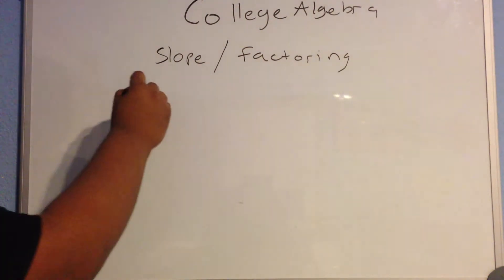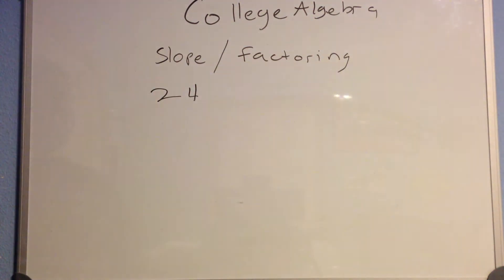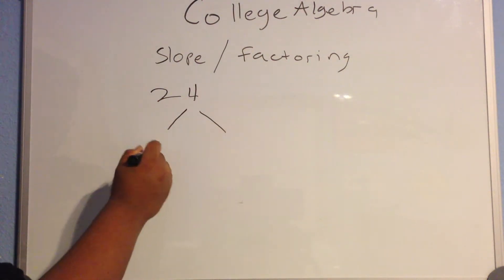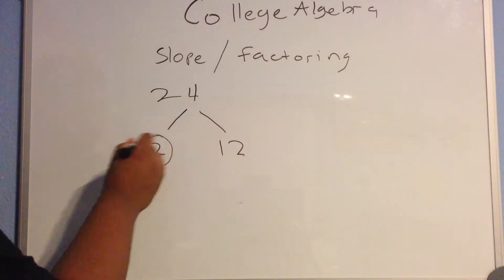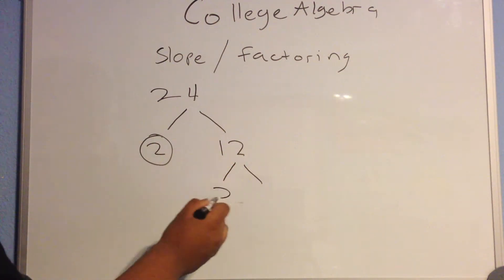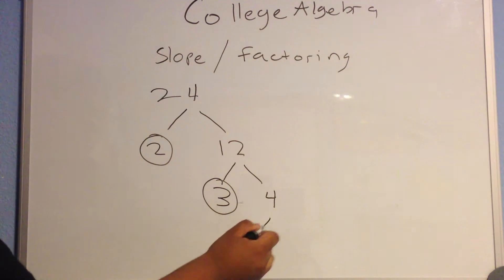Let's do 24. There's actually a good way to get the prime factors, and it would be through a spiderweb method. Essentially, you would do 2 times 12. Here's a prime factor, so ignore that. Here's 12, and 12 would be 3 times 4. Here's a prime factor, and here's 2 times 2.